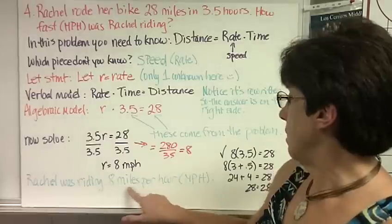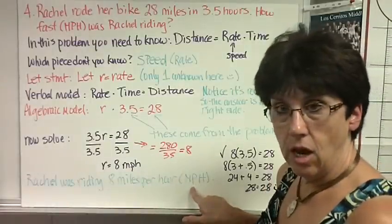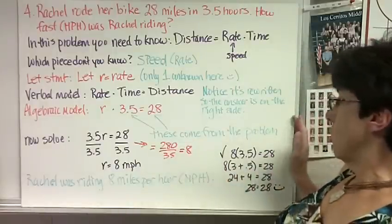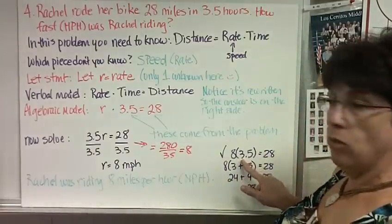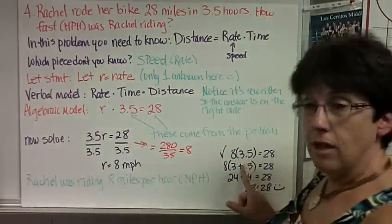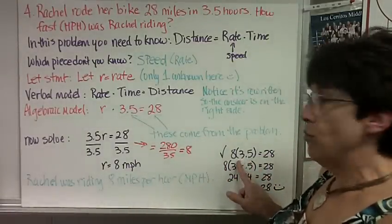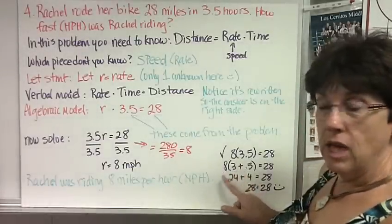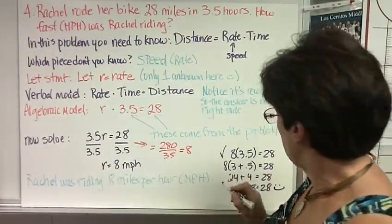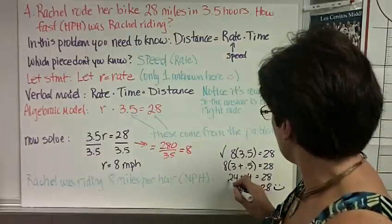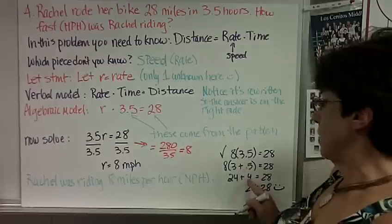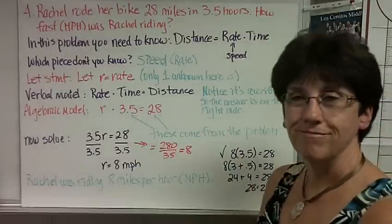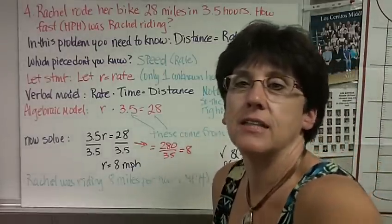Our sentence, Rachel was riding 8 miles per hour, and here's our check. So I wanted to say 8 times 3.5 equals 28. Look, I'm doing the distributive property. I'm breaking this up to be 8 times 3 plus 0.5. 8 times 3, 24. I've got to watch my finger, huh? Let me write that. Half of 8 is 4. Add those together. 28. And that's...